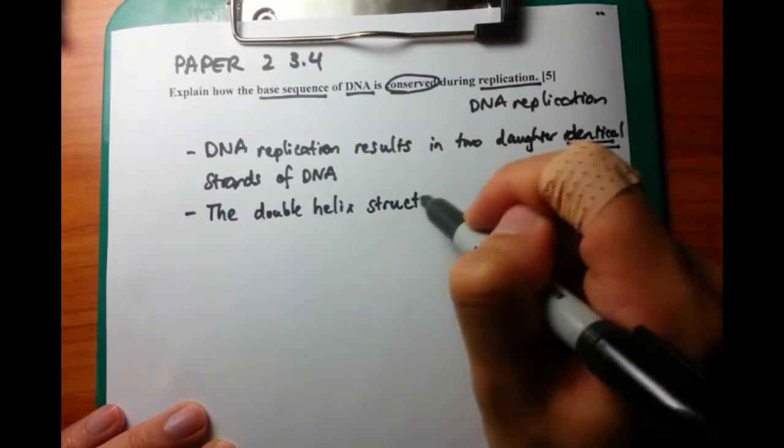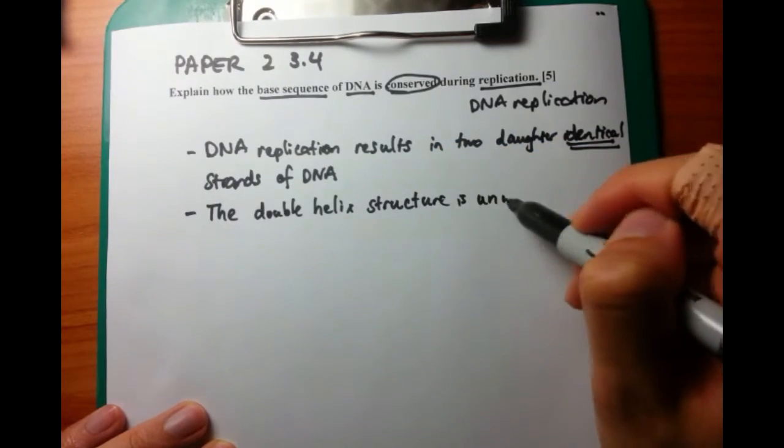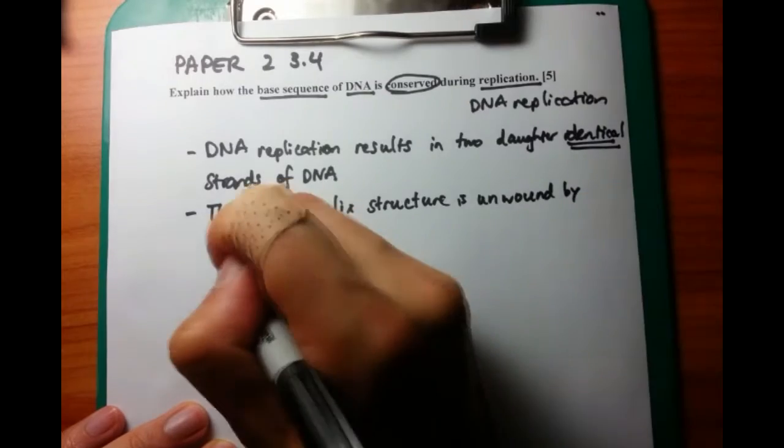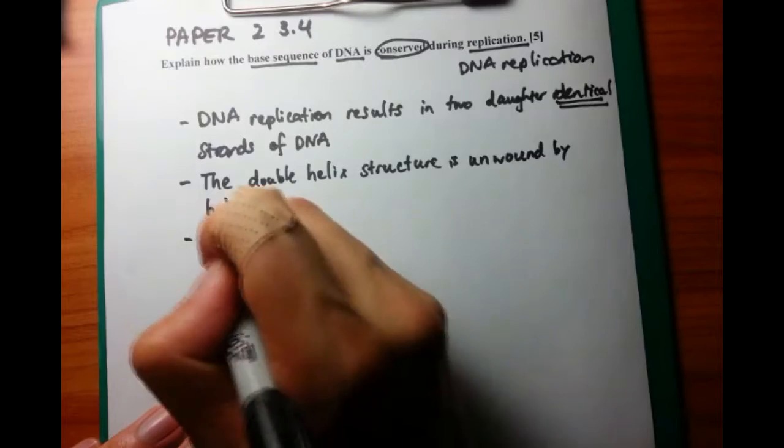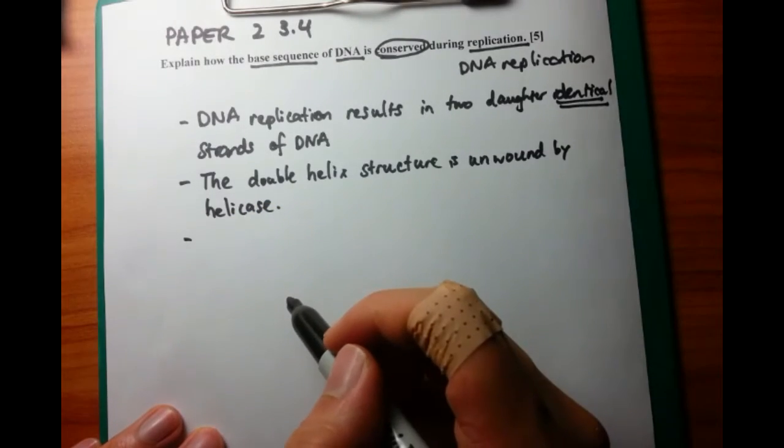Unwinding, of course, first. The thing that causes it to be unwound is helicase. Think of helicase as an enzyme because it's got an 'ase' ending, and helix, so the helix enzyme.